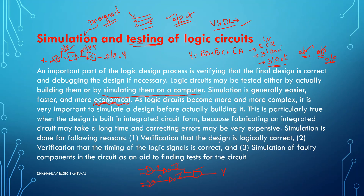Simulation is done for the following reasons: verification that the design is logically correct; verification that the timing of the logical signals is correct; and simulation of a faulty circuit as an aid to finding tests for the circuit. For example, if you should have connected an AND gate but connected an OR gate instead, you can replace them easily in the simulation package and rewrite the circuit.